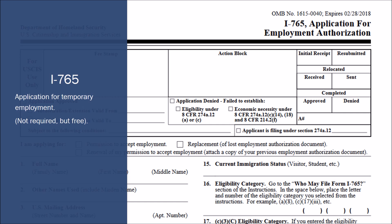The I-765 is not a required part of the adjustment of status packet, but it's free to file if you do so at the same time as the rest of the forms. The I-765 is an application for temporary employment authorization. Once the individual achieves lawful permanent resident status that carries the legal ability to work in the U.S., but the adjustment of status process can easily take six or eight months — sometimes more. The I-765 gets the foreign national legal work authorization before she's eligible for lawful permanent residence. These are supposed to be granted in 90 days; right now USCIS is taking about 120 days.